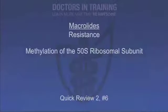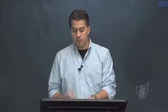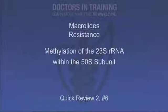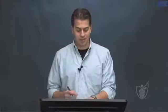Question 6: What is the primary mechanism by which bacteria become resistant to macrolides? Methylation of the 50S ribosomal subunit — more specifically, methylation of the 23S ribosomal RNA within the 50S ribosomal subunit. This may be written either way on exams.